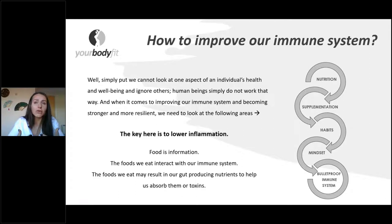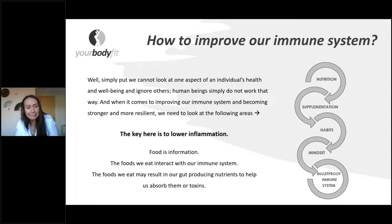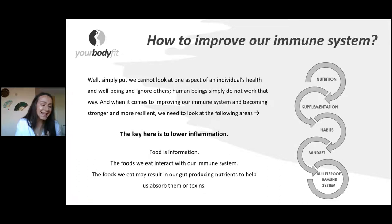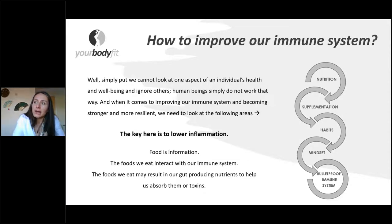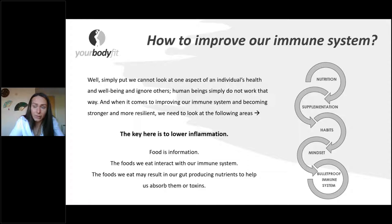A lot of people have asked me, especially in the last couple of days: what can I do to improve my immune system? The media is telling you eat healthily and exercise. Is that it? Is that all? No, it's not. By the time foods arrive at the supermarket shelves, on average it's already about five days old. So you won't get as many nutrients as you would getting straight from the crops. That's a fact.